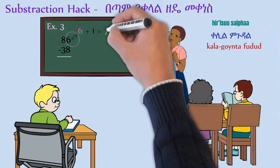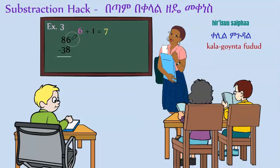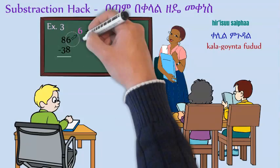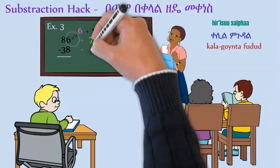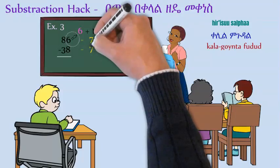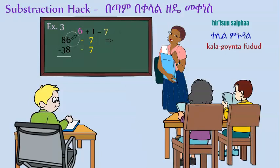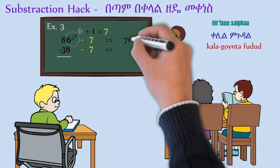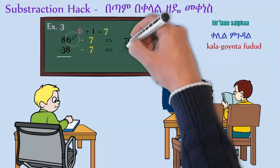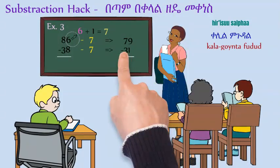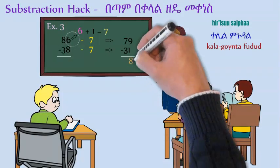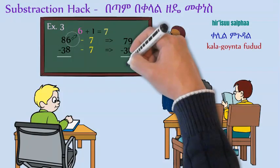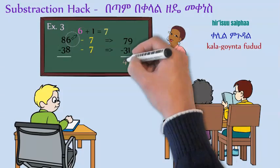Then subtract the seven from 86. So 86 minus 7 is 79. And 38 minus 7. Take one from nine, you get eight. Take three from seven, you get four.